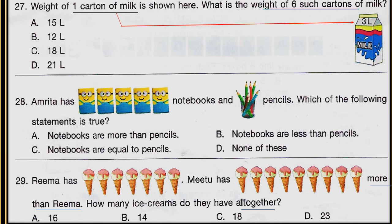Amrita has the notebooks shown in the figure and pencils shown in the figure. Which of the following statements is true? Count the notebooks and pencils, then check options A, B, C and D to choose the correct answer. You can tell your answers at the end of the video.